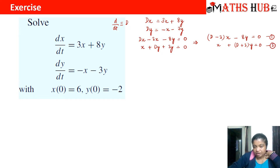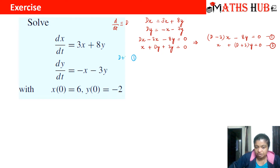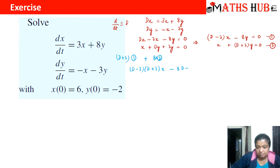Now we need to eliminate either x or y. To eliminate y, we make the coefficients of y the same in both equations. The coefficient of y is −8 in equation 1 and (D + 3) in equation 2. So we operate (D + 3) on equation 1 and add 8 times equation 2. Equation 1 becomes: (D − 3)(D + 3)x − 8(D + 3)y = 0. Multiplying equation 2 by 8 gives: 8x + 8(D + 3)y = 0.